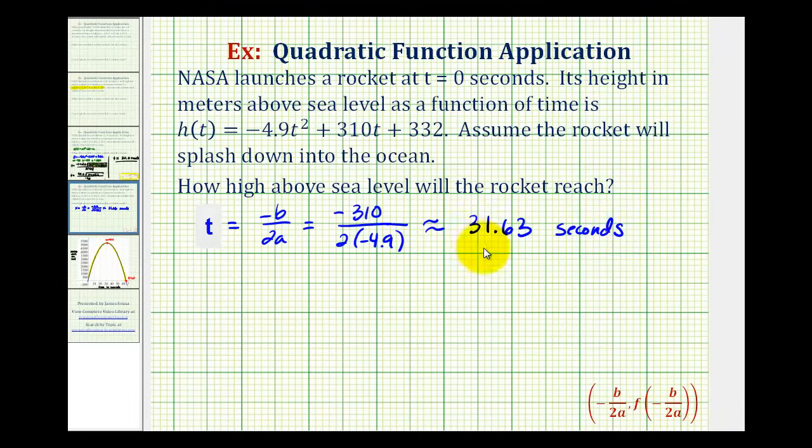Again, this is the time it takes to reach the high point above sea level. But the question is, what is the function value, or what is the height above sea level? So our ultimate goal is to find h of 31.63. So we're going to substitute 31.63 for t in our function. And this will give us our maximum height.